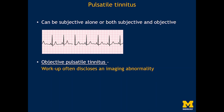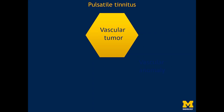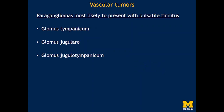On the other hand, pulsatile tinnitus can be both subjective or subjective and objective, and the workup most often discloses an imaging abnormality. I like to think of the evaluation of pulsatile tinnitus in three broad categories. Number one: is this a vascular tumor? For the most part, the vascular tumor that causes pulsatile tinnitus is going to be a paraganglioma, typically located close to the middle ear cavity — it could be a glomus tympanicum, a glomus jugulare, or a combination which is glomus jugulotympanicum.